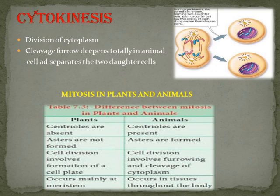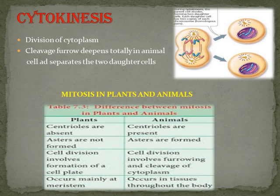In cytokinesis — division of the cytoplasm — the cleavage furrow deepens completely in the animal cell and separates the cell into two daughter cells. The two daughter cells formed are exactly identical, having the same chromosome number as the parent cell.